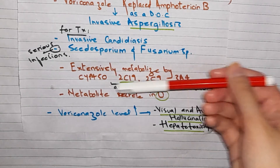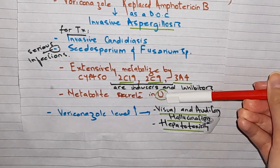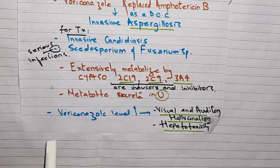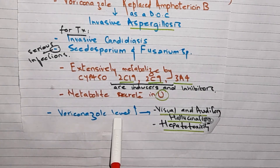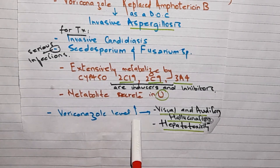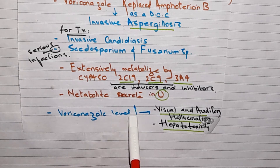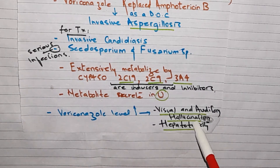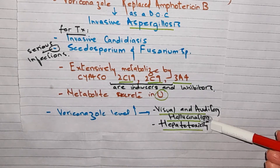Metabolites are excreted in urine. As a result of increased Voriconazole levels, it can cause visual and auditory hallucinations, as well as hepatotoxicity.